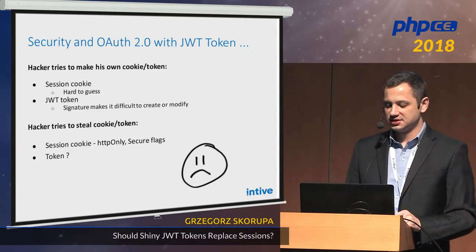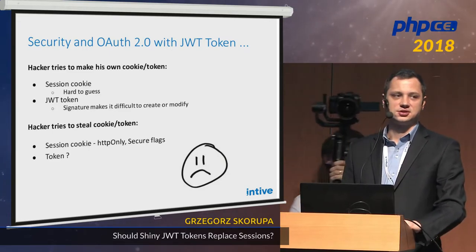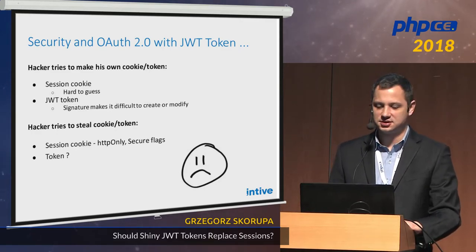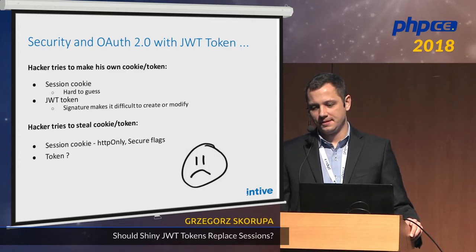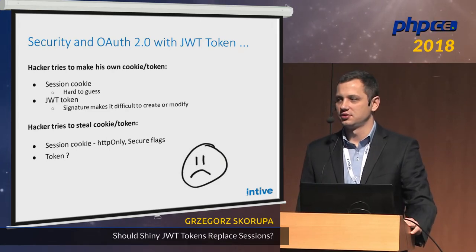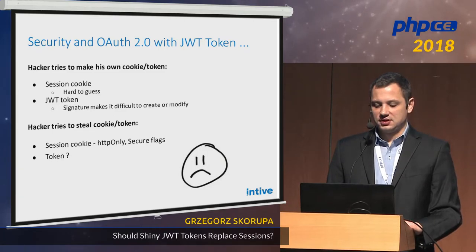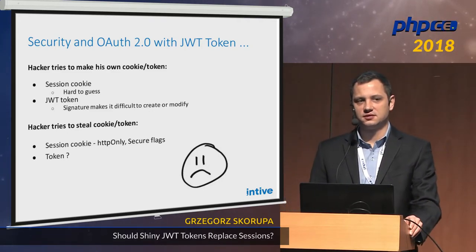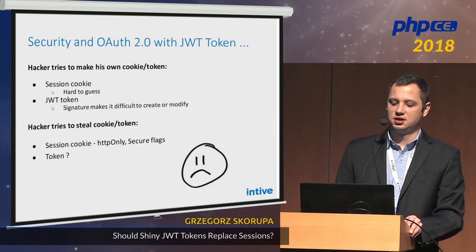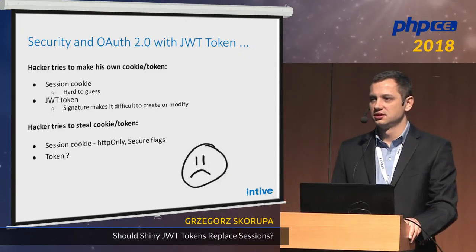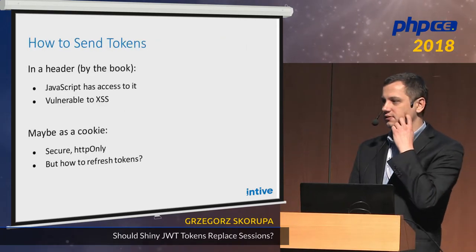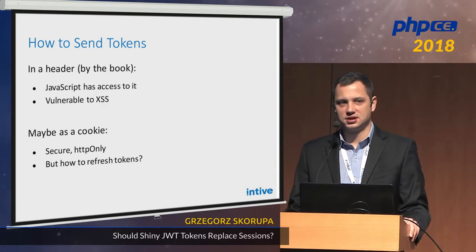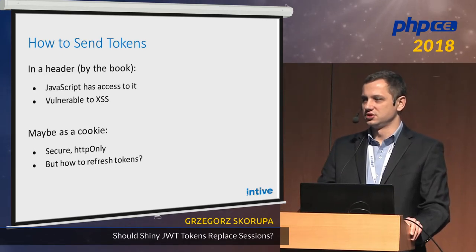Let's think about a hacker trying to make their own session ID or token. The safety of a session ID is based on the fact that it's a hard-to-guess random string, proven over many years. JWT token safety is based on the difficulty of creating one and the inability to modify it due to the signature. But what if a hacker tries to steal a session cookie? With the Secure and HTTP-only flags, JavaScript won't steal it and traffic sniffing won't steal it. But for a token — according to OAuth it should be sent in a header — which means any web application must have JavaScript to read and send it, making you immediately vulnerable to XSS attacks.